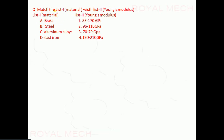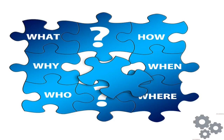Match List 1 (materials) with List 2 (Young's modulus values). The correct answer is 2-4-3-1: Brass has a Young's modulus of 96–110 GPa; Steel has 190–210 GPa; Aluminum has 70–79 GPa; and Cast Iron has 83–170 GPa.